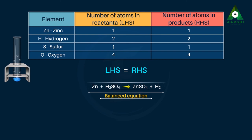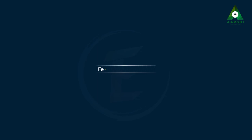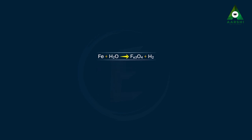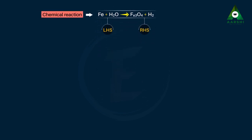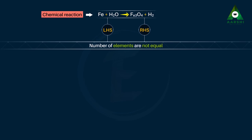Now, look at the following equation: Fe plus H₂O gives rise to Fe₃O₄ plus H₂. If you notice, the number of atoms of each element are not the same on both sides of the arrow. Therefore, this is an unbalanced equation.